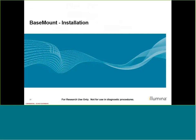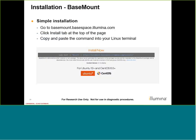Let's go ahead and switch gears and talk about BaseMount. Like CLI, let's run through some BaseMount installation and then jump into some demos. Installation for BaseMount is even easier than installing CLI. You have to go to our site at basemount.basespace.illumina.com and click the Install tab at the top of the page. That's going to show you a URL and you're going to copy and paste it directly into your Linux terminal — this is Linux specific only. You completely copy this command and that will help us install right away.